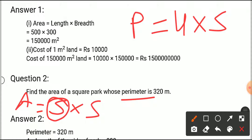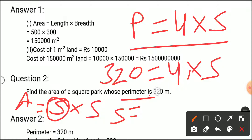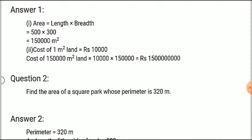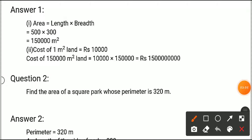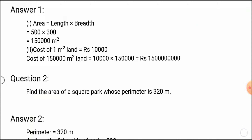We insert 320 in place of perimeter: 4 multiplied by side equals 320. So side equals 320 upon 4, which gives us 80 meters. Now we have the side, so the area equals side into side, that is 80 into 80, which equals 6400 meter square.